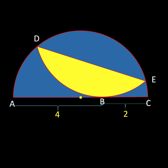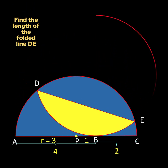Let's locate the center of the blue semicircle and call it point P. Since the diameter of the semicircle is four plus two equals six, the length of the radius is one half of six, which is three units. It follows that the length of segment PB must be one unit. Then let's construct a red circle containing this yellow circular segment of the original blue semicircle.